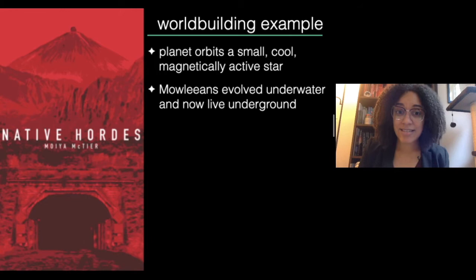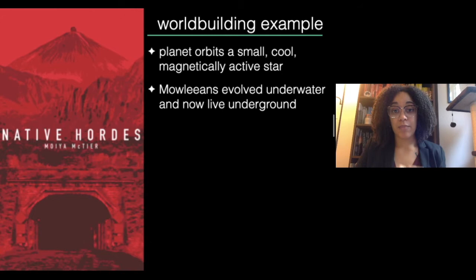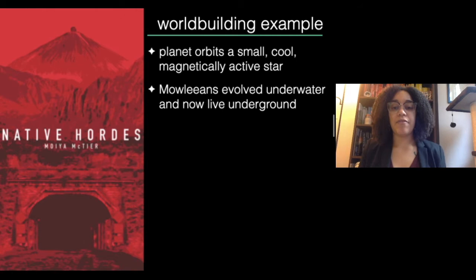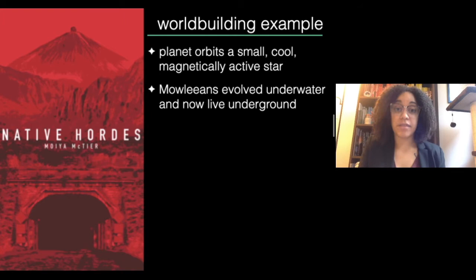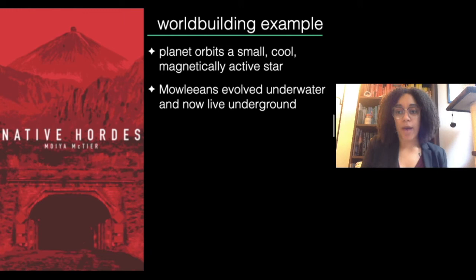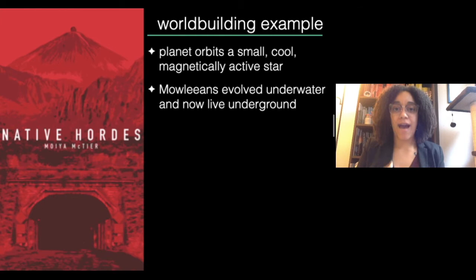I took these characteristics and thought: how would that actually affect the life and culture that evolves on this planet? I called the dominant life forms Mallians. I decided they probably spent much of their evolutionary history underwater, because water can protect you from the radiation that comes from solar flares — so evolving underwater, they could survive and thrive without being affected by their star's radiation. Over time stars get less magnetically active, and once that happened, the Mallians came out from the water, but weren't used to living on the surface, so they went underground. You can see how all of this follows logical steps based on science — this is my type of worldbuilding. I call it facts-based worldbuilding.